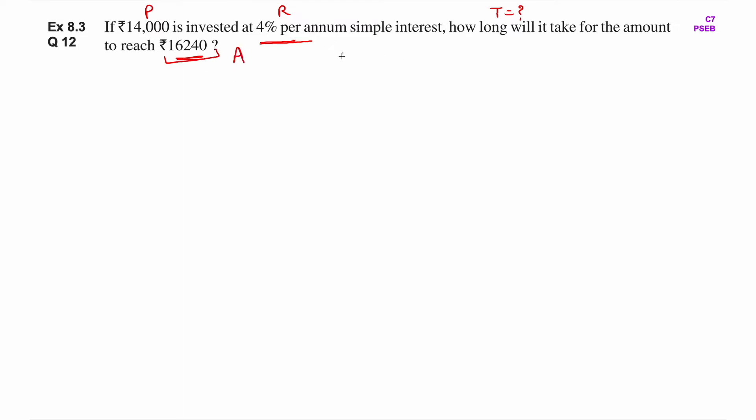Do you remember A? A is equal to P plus I. Whether you're investing for some time or if you've borrowed money, the total money you need to return at the end is calculated this way: A equals principal amount plus interest.